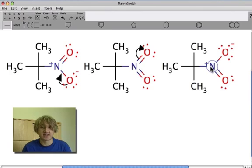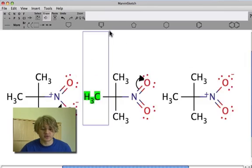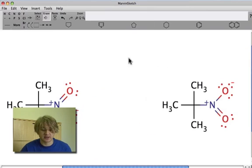So how do we designate this fully instead of drawing this invalid Lewis structure in the middle? The way we would actually designate this is shown here, where we draw both of those arrows in that same place.